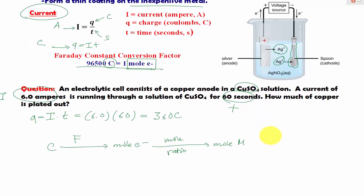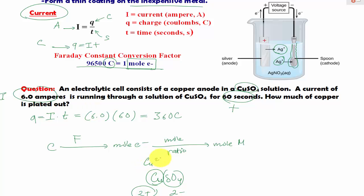Where do we get the mole ratio? In this case, we know we are dealing with copper sulfate, specifically copper. Looking at copper sulfate, CuSO4, the sulfate has a charge of 2 minus, so therefore copper must have a charge of 2 plus. Once we know the charge of copper we can write the half-cell reaction. Since we are talking about plating out as a solid, we write it as a reduction: Cu²⁺ + 2e⁻ → Cu(s). That is where we get our mole ratio.